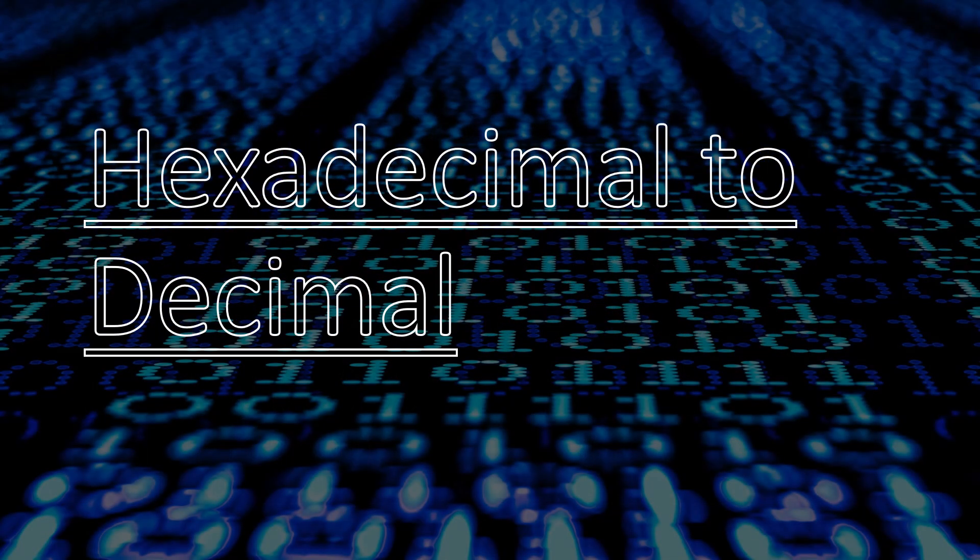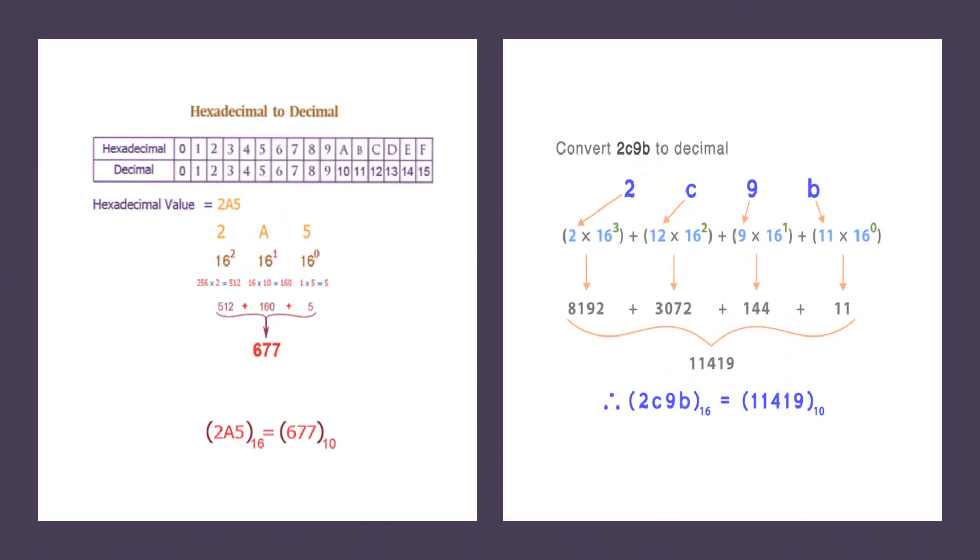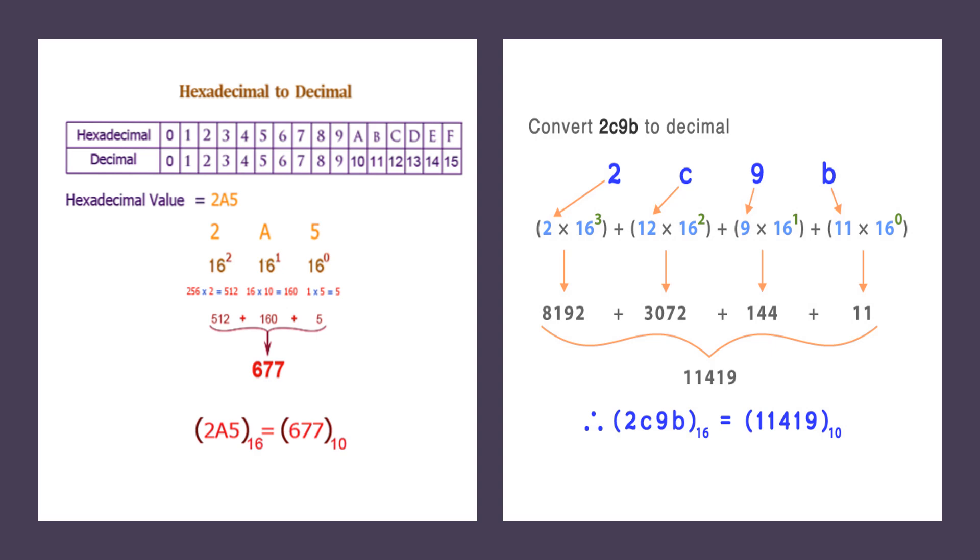Converting hexadecimal to decimal numbers. Write the place value of each position below the given number in powers of base 16, and multiply each place value by the power of base 16. Add all the products together to have the answer.